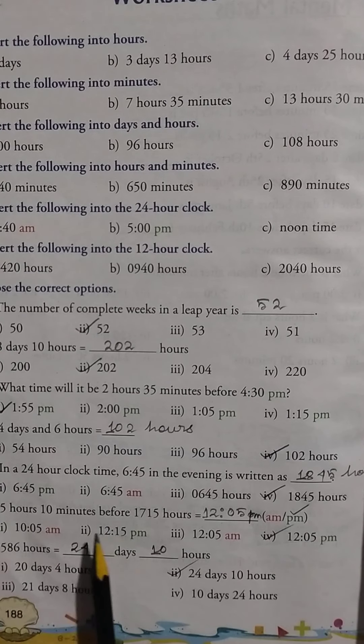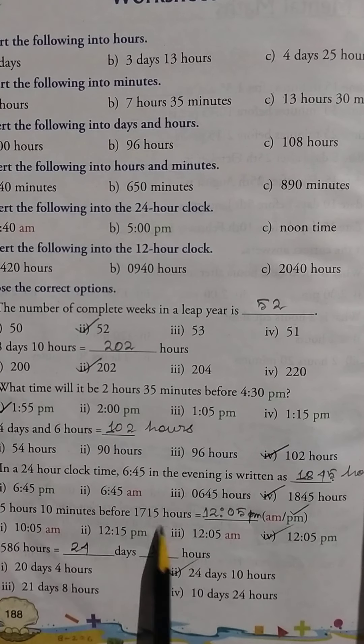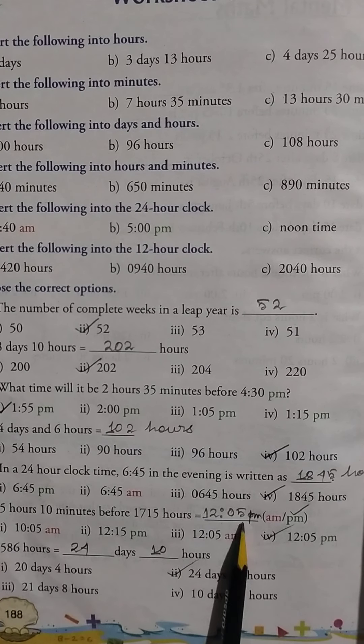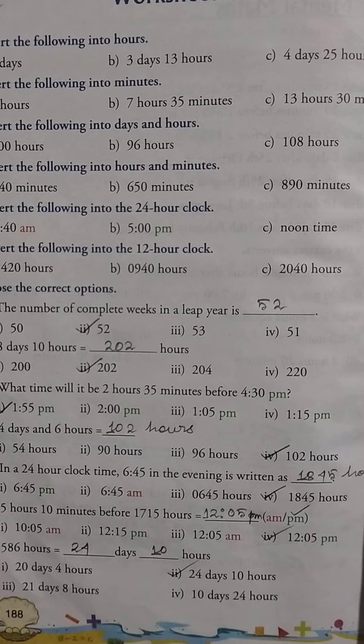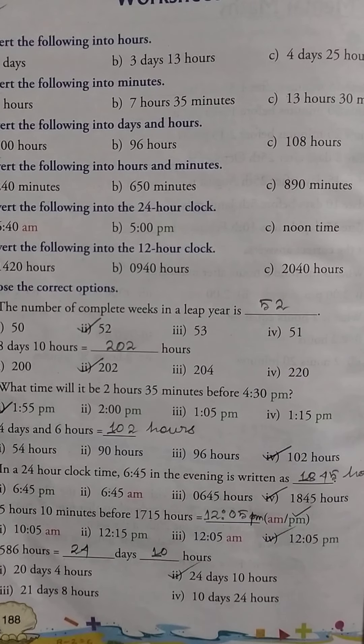586 hours equals 24 days 10 hours. Look at how to solve these problems. Thank you.